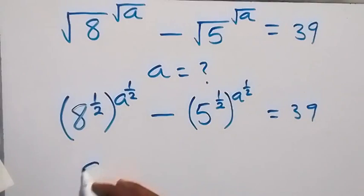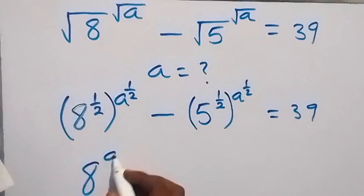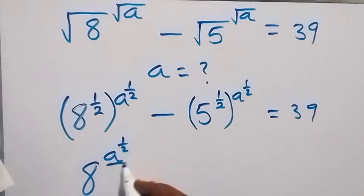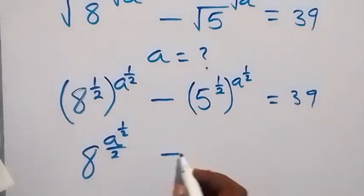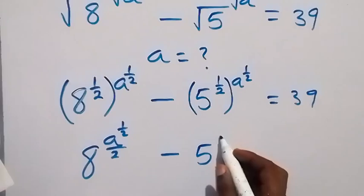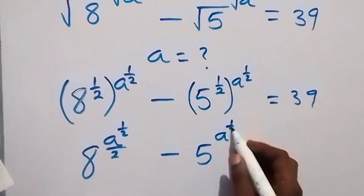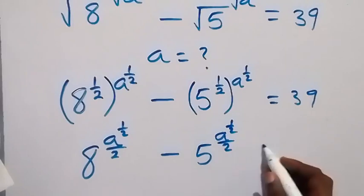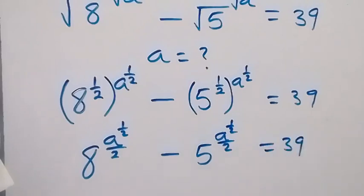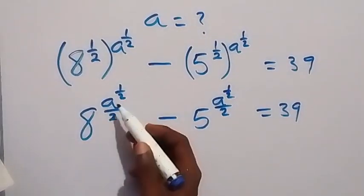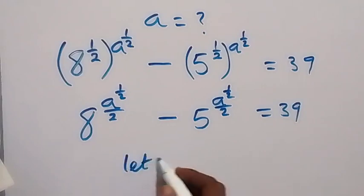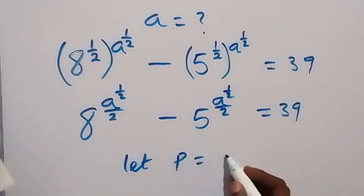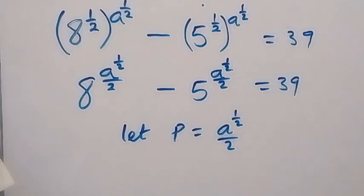This can be written as 8 raised to power a times half over 2. So we write it as 8 raised to power a/2 divided by 2, minus 5 raised to power a to power half over 2, which equals 39. Here we have a to power half over 2 as a common term, so let a letter represent that.